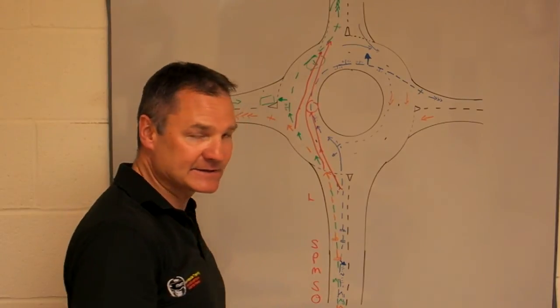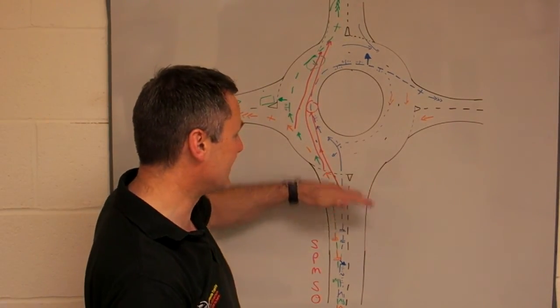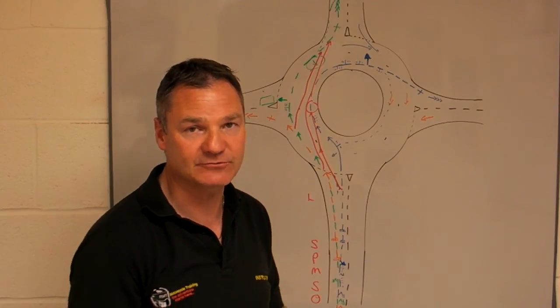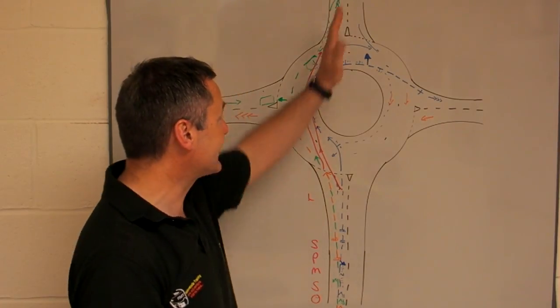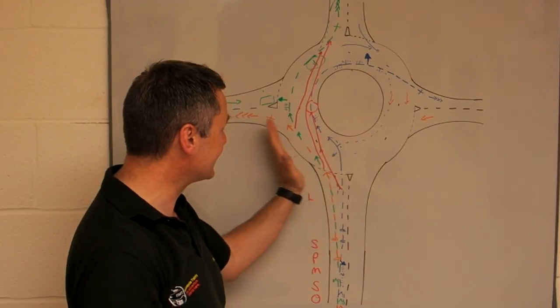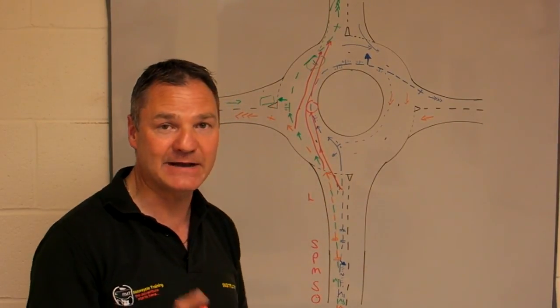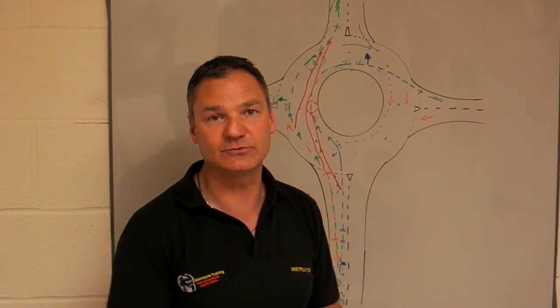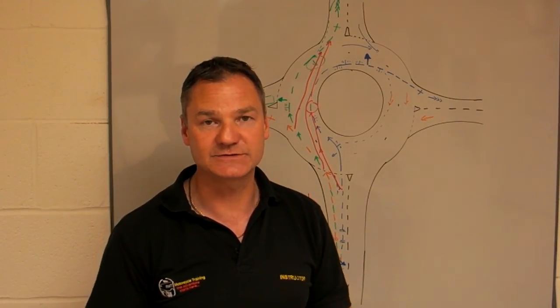So the best thing to do is if you're not sure, stop behind the line to ensure that it's safe when you do commit yourself into the roundabout. If you're going straight on or left, always stay in the left hand lane and imagine there's a car next to you on the right hand side, and that keeps you into the lane that you need to stay in for your safety.